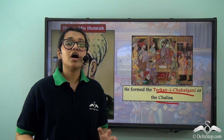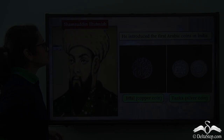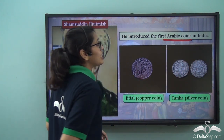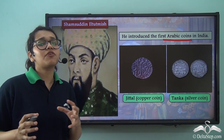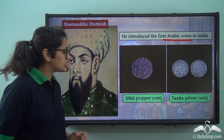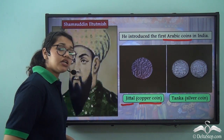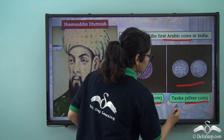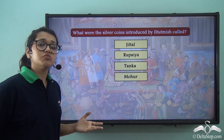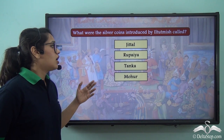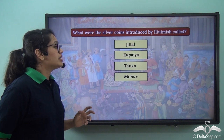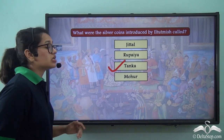It was Shamsuddin Il Tutmish who first introduced Arabic coins in India. Before this, only Sanskrit was found on coins. He introduced copper coins known as Jittal and silver coins known as Tanka. When asked what the silver coins introduced by Il Tutmish were called — Jittal, Rupaya, Tanka, or Mohar — the correct answer is Tanka.